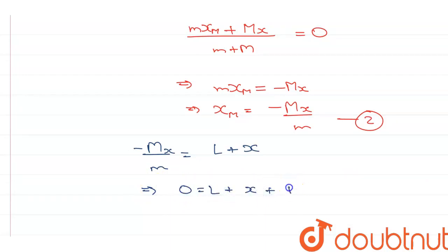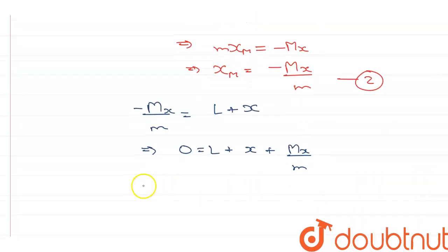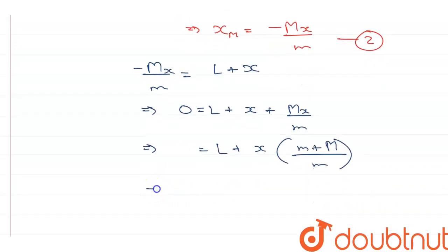This means L plus Mx by m equals 0, which means x is equal to minus mL upon M plus m.